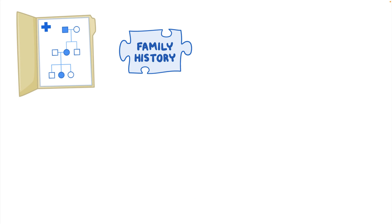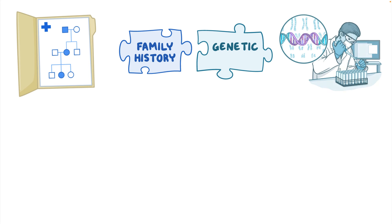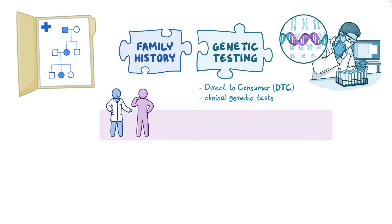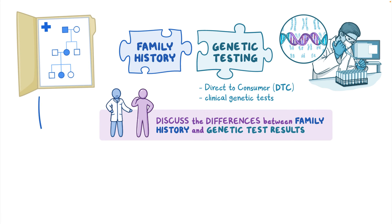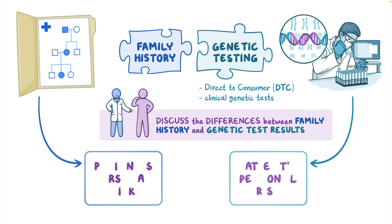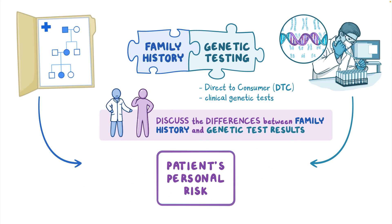Family history is only one piece of the risk puzzle, and genetic testing — either through direct-to-consumer, abbreviated DTC genetic testing, or clinical genetic tests — can also help gain further insights into a patient's risk. Regardless of how information is obtained from a genetic test, it's important to discuss the differences between family history and genetic test results with patients. Each one on its own may tell a different story, but together they can provide a more complete picture of a patient's personal risk for developing a health condition.